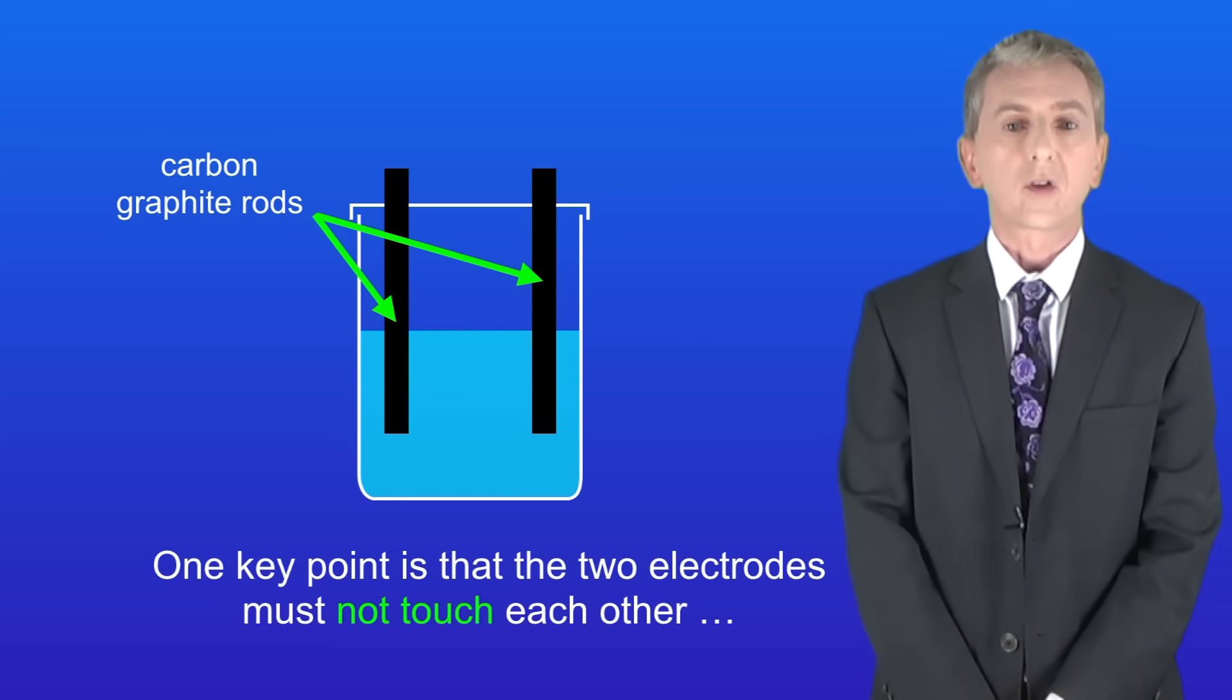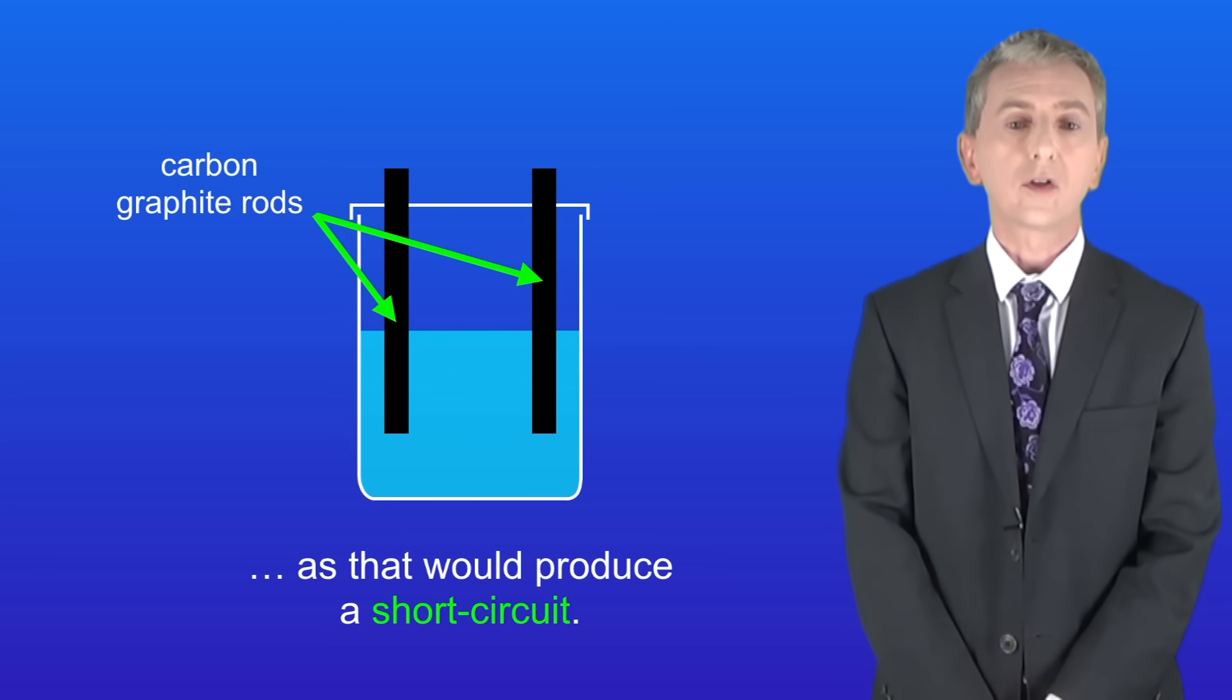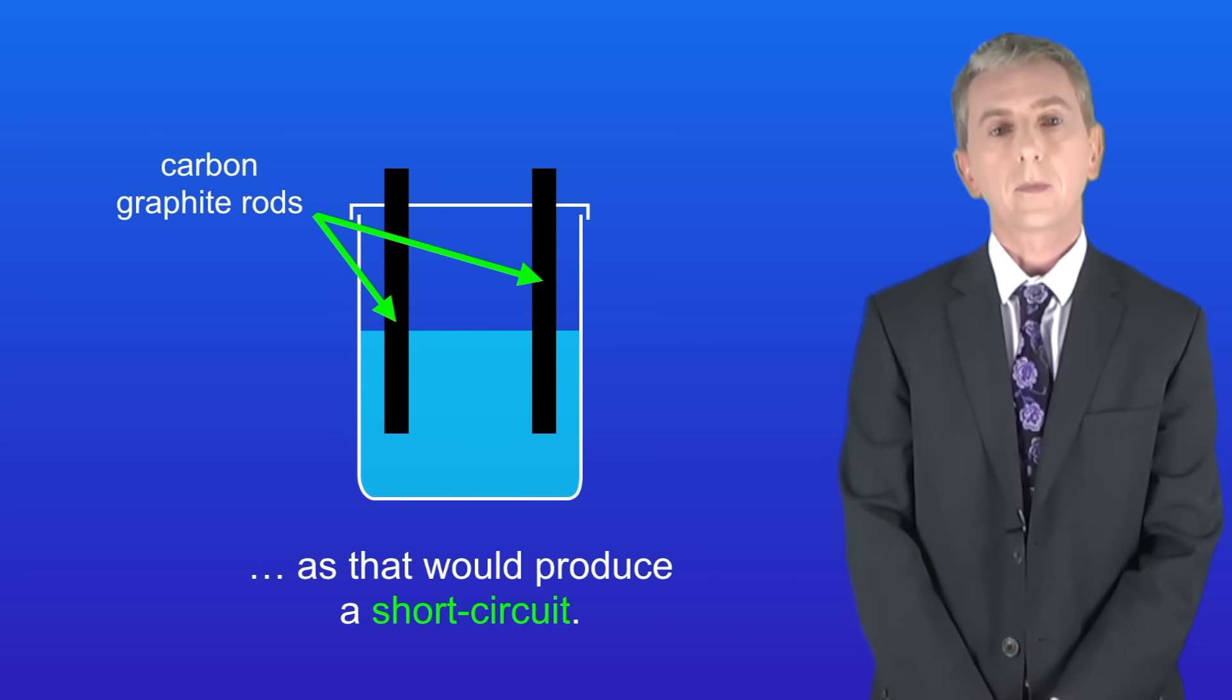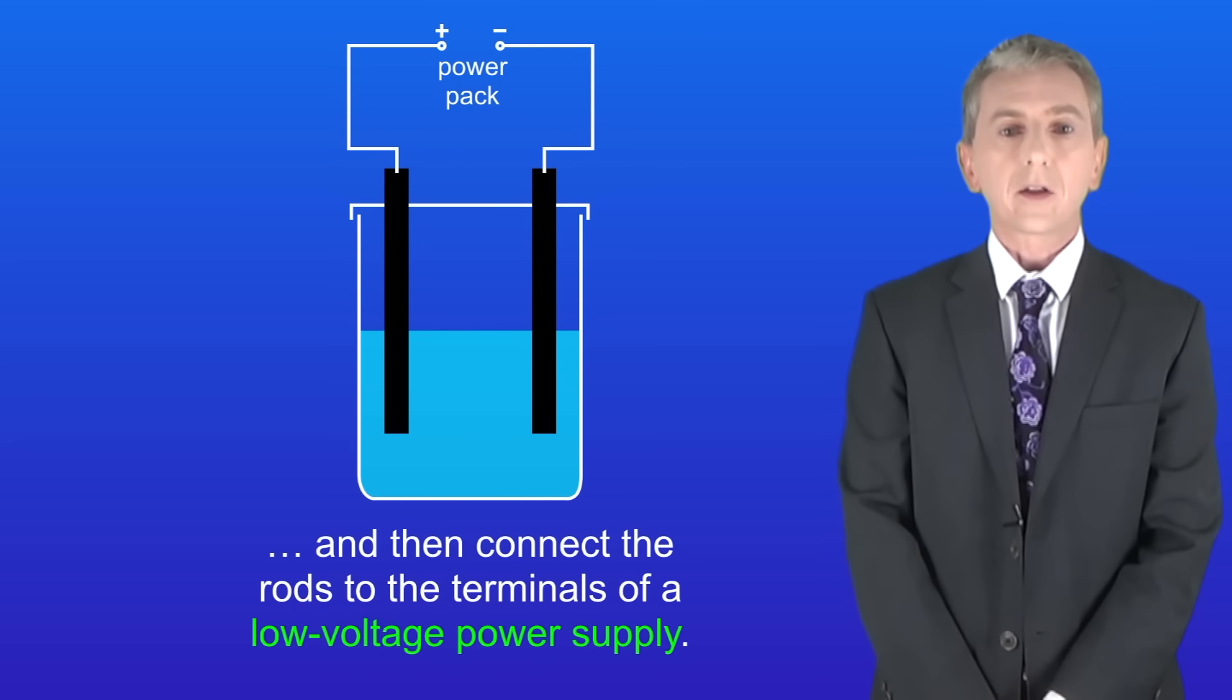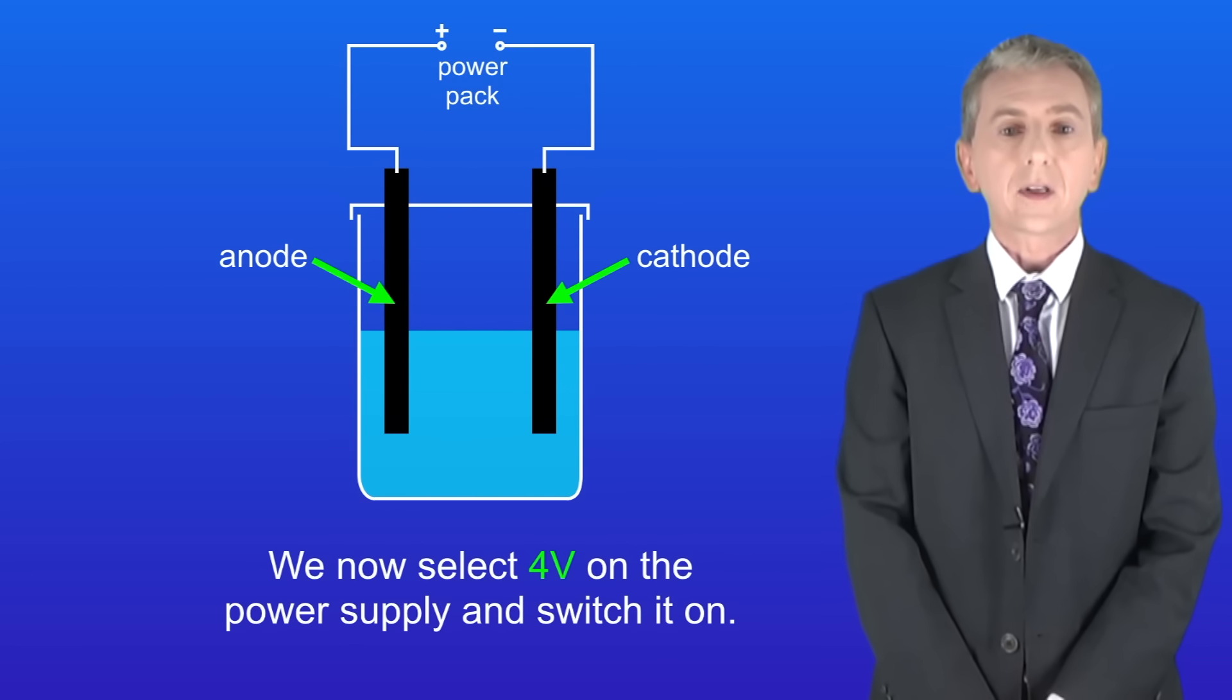One key point is that the two electrodes must not touch each other as that would produce a short circuit. Next we attach crocodile leads to the rods and then connect the rods to the terminals of a low voltage power supply. We now select 4 volts on the power supply and switch it on.